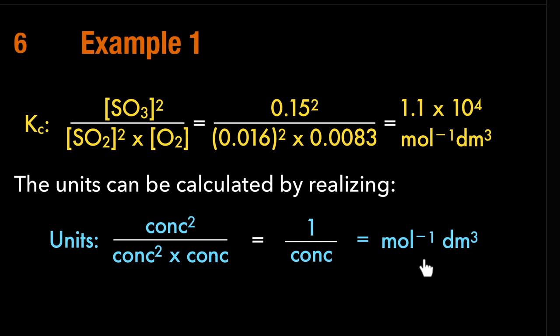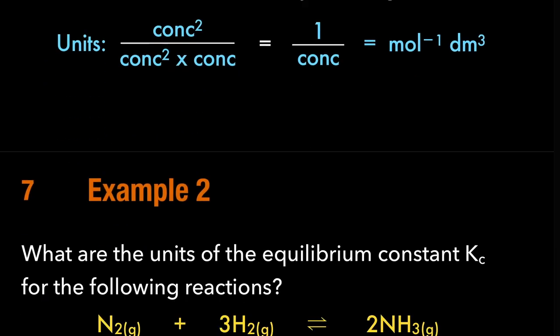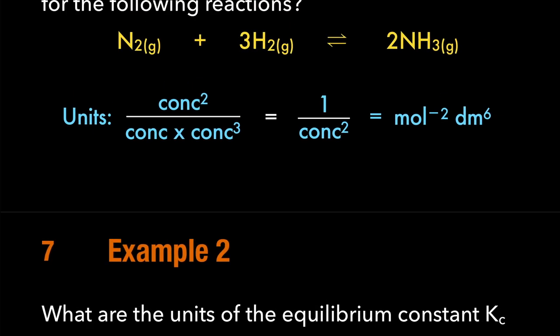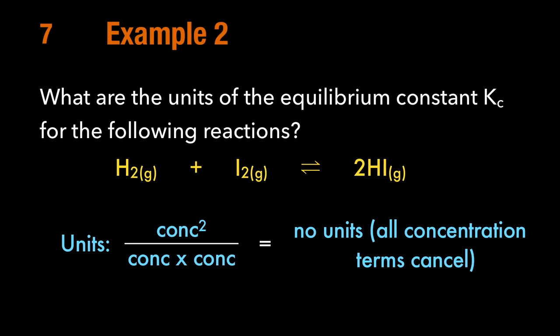Always write moles first and then dm³ for units. There are other Kc expressions — for example, H₂ + I₂ ⇌ 2HI gives Kc = [HI]² over [H₂][I₂], and in this case the units cancel out. Now let's move to the first calculation question, on slide 8.